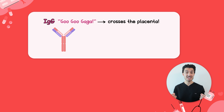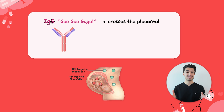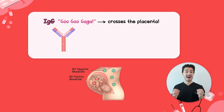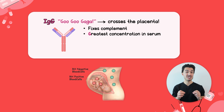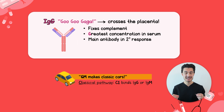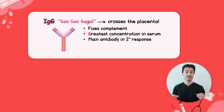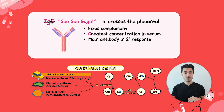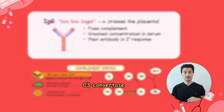Since IgG can cross the placenta, it's a key player in hemolytic disease of the newborn. Look out for things like Rh incompatibility or ABO incompatibility, and remember that Rh-negative mothers receive RhoGAM anti-D. IgG also fixes complement — and along with IgM, these are the two immunoglobulins that fix complement. Remember that 'GM makes classic cars,' which helps you recall they activate the classical pathway, increasing C3 convertase activity.